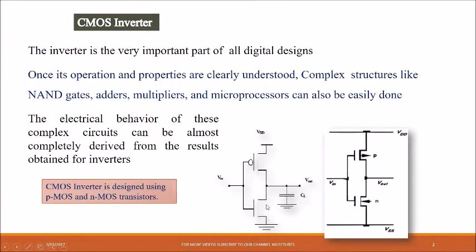Here you can see a CMOS inverter — Complementary Metal Oxide Semiconductor inverter — which has one PMOS as well as one NMOS. The input is a common input for both the pull-up and pull-down networks. If the input is zero, the output should become one, and if the input is one, the output should be zero. You can see the similar structure of the CMOS inverter here.